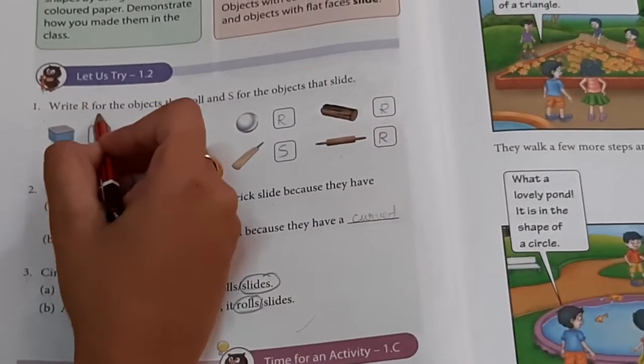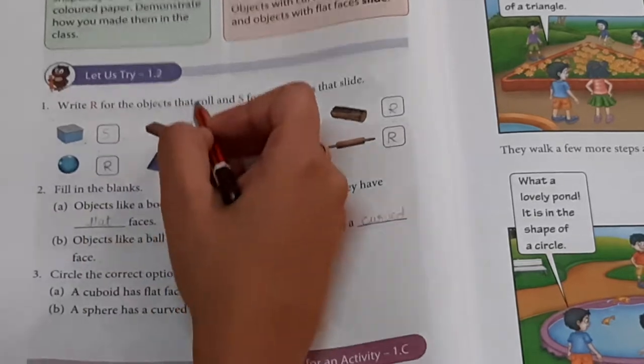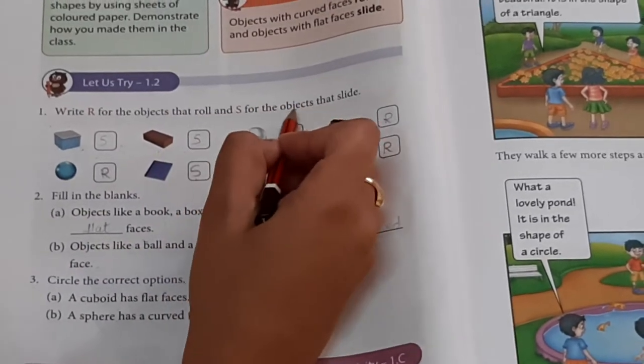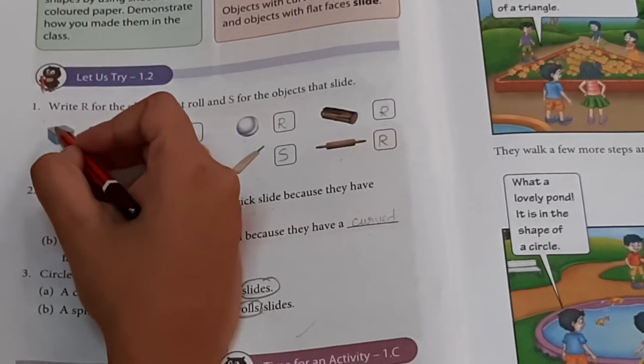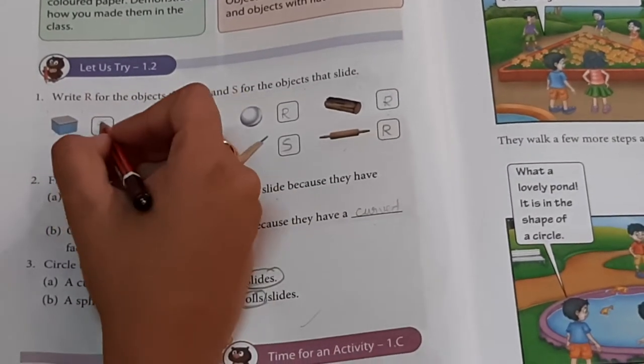Let us try 1.2. First question, write R for the objects that roll and S for the object that slide. It has a flat face. So, it slides.